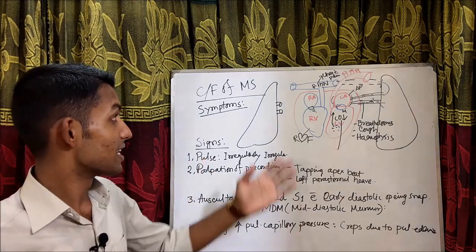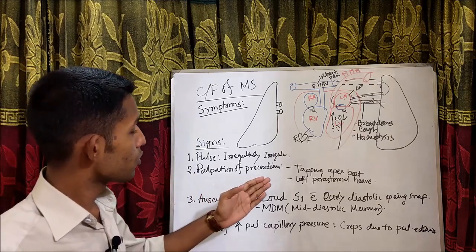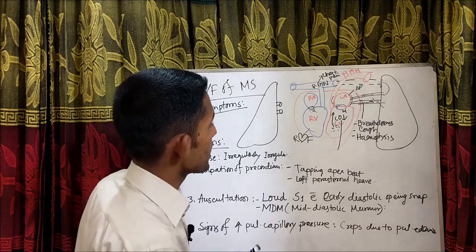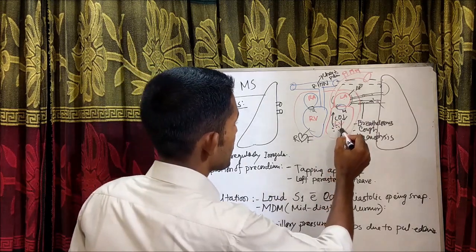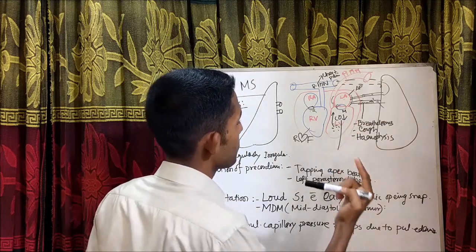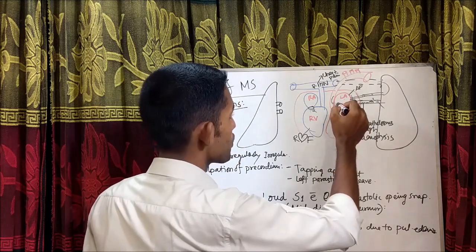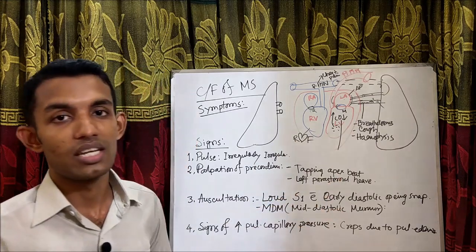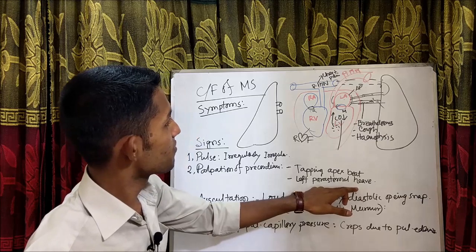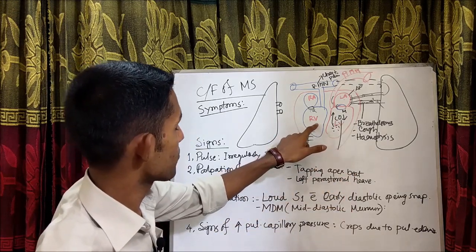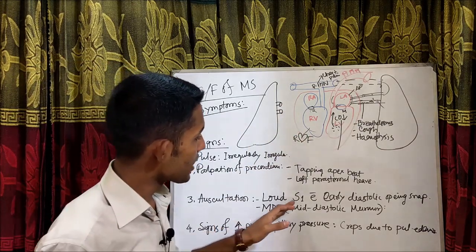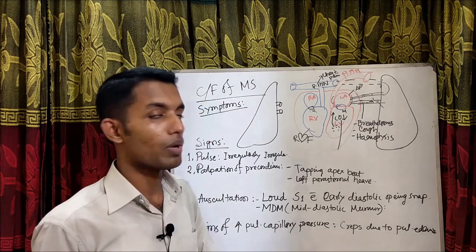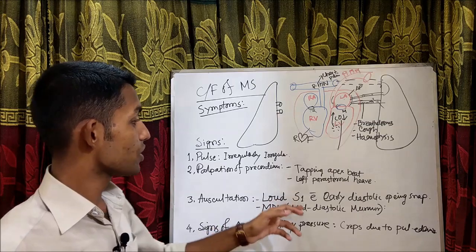Signs of mitral stenosis: the pulse is irregularly irregular due to atrial fibrillation. On palpation of the precordium we get a tapping apex beat and left parasternal heave. The tapping apex beat occurs because left ventricular filling is reduced, so the apical impulse is weak; instead, the accentuated first heart sound from the mitral valve is transmitted to the apex and felt as a tap. Left parasternal heave is due to right ventricular dilatation. On auscultation: loud S1 with early diastolic opening snap and mid-diastolic murmur.